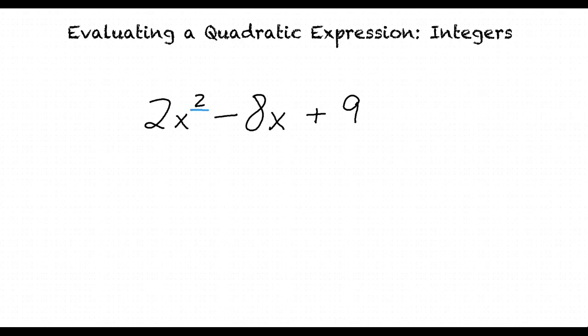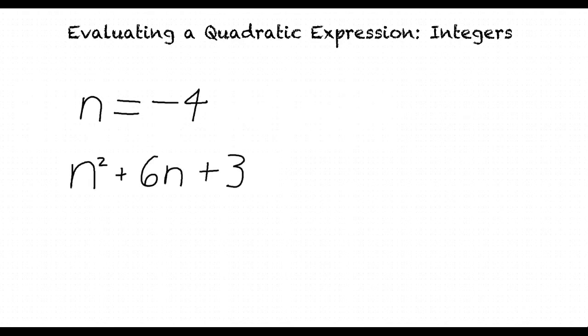Let's work through an example problem. We are asked to evaluate the following expression when n is equal to negative 4. n squared plus 6n plus 3. The first thing we will do is substitute negative 4 for n, since n equals negative 4 is an essential piece to solve this problem.